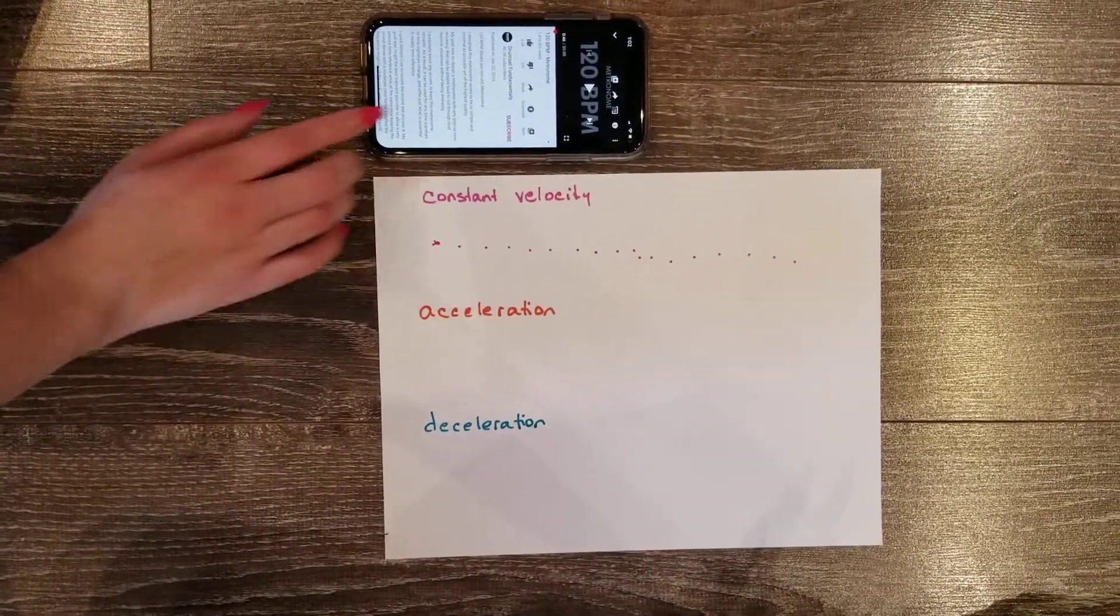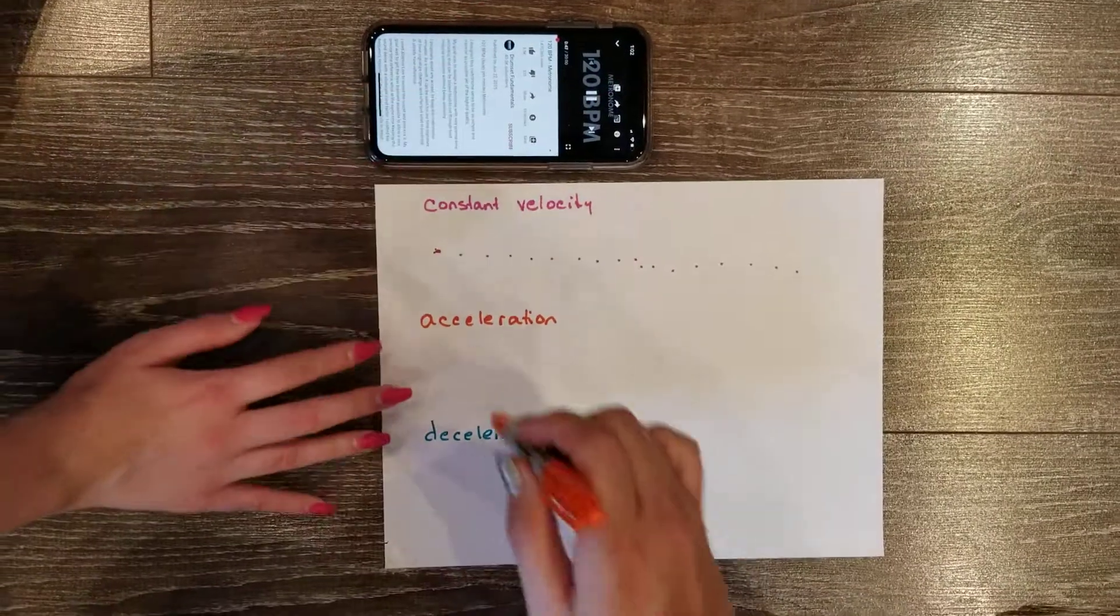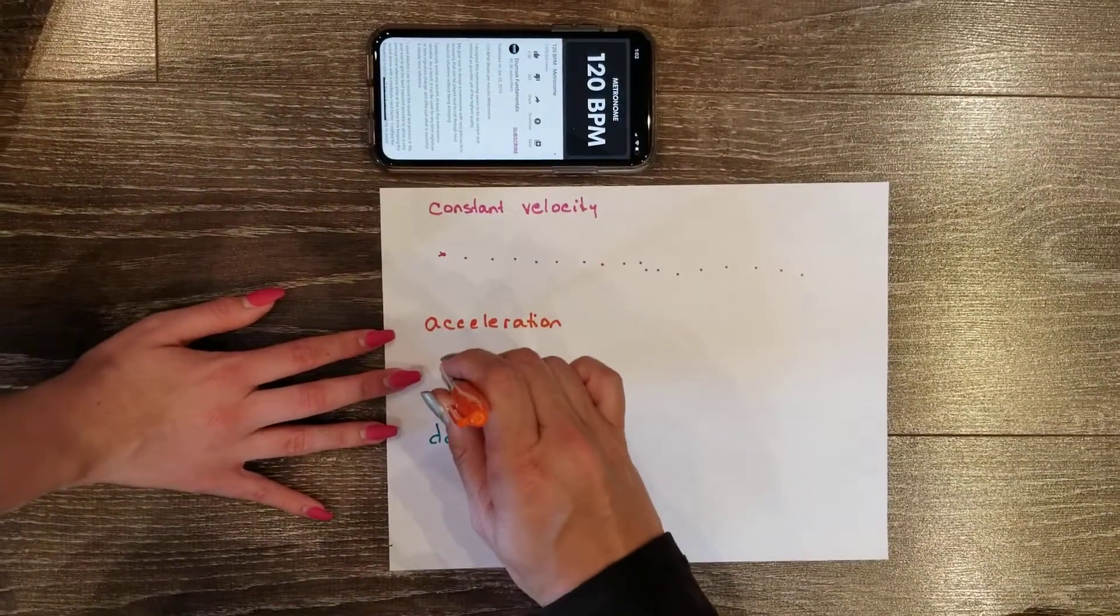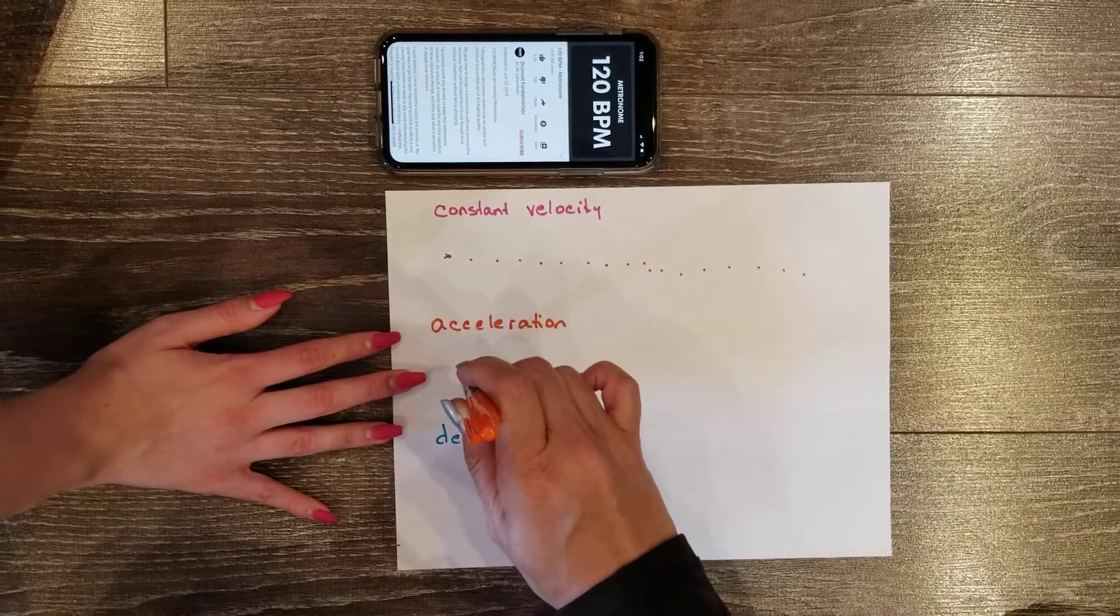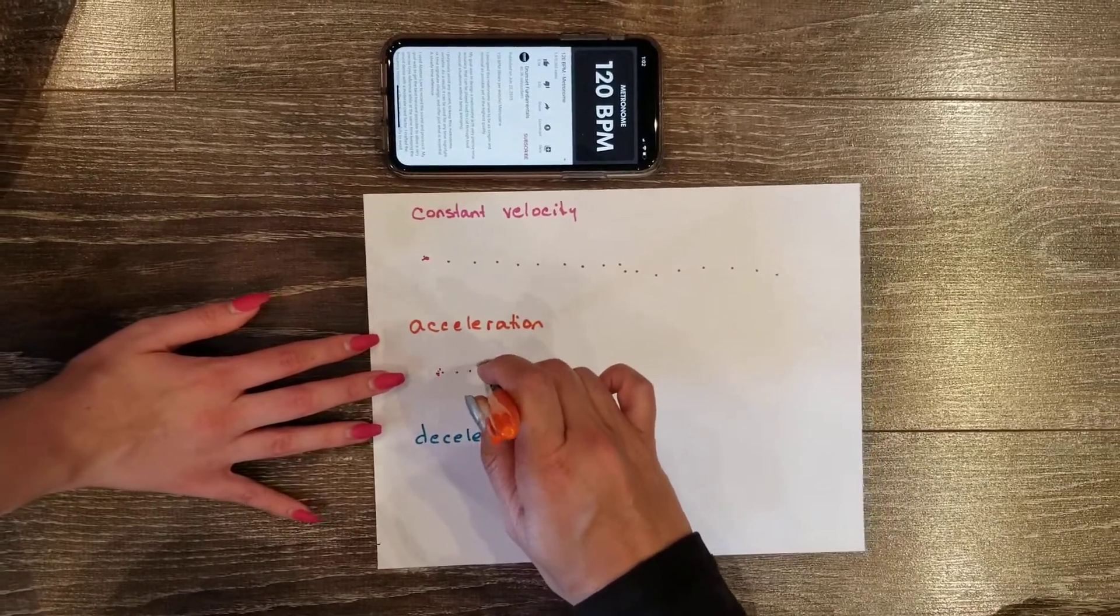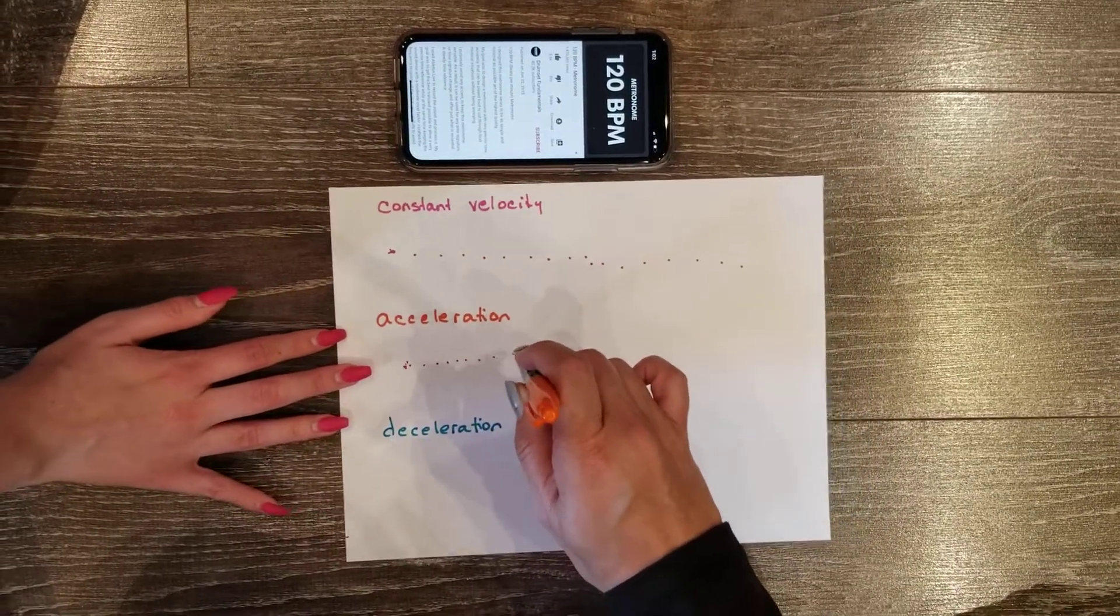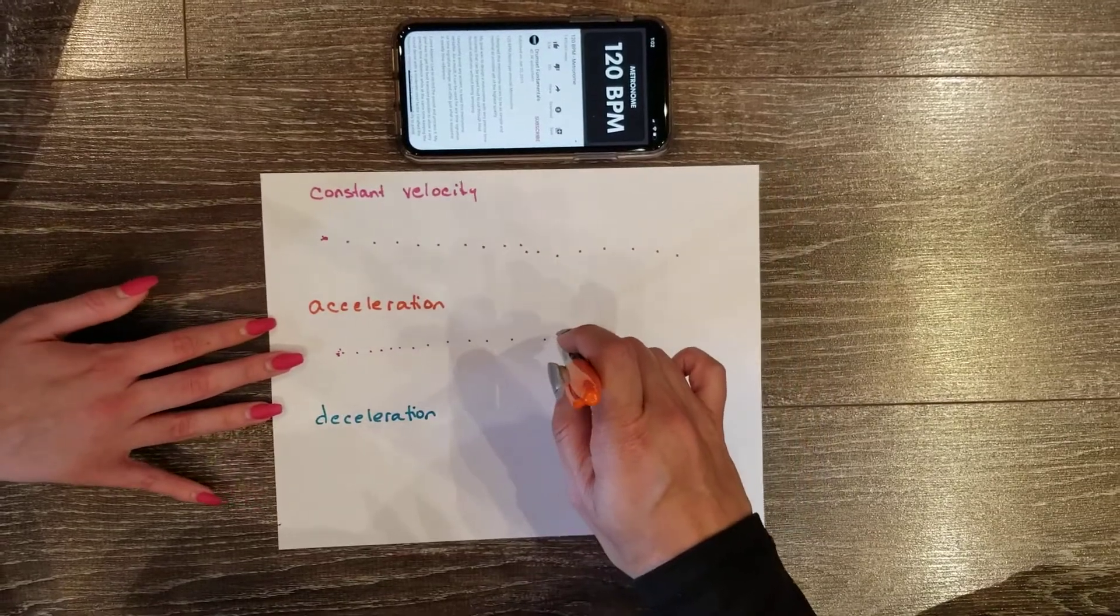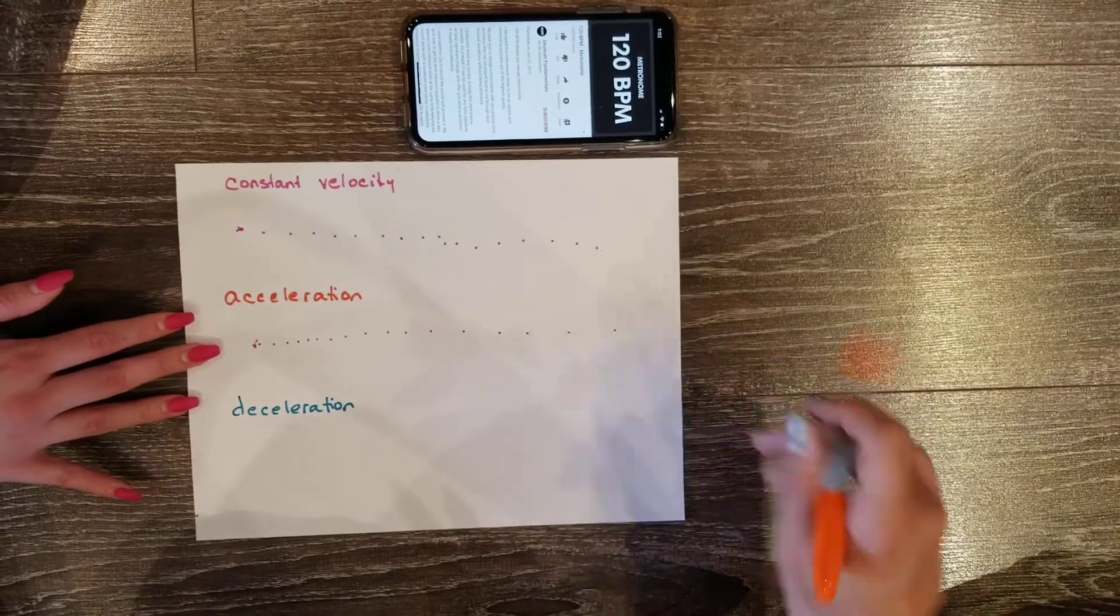Again, start your timer. This time before my helper pulls, they're going to start at a slow speed and then speed up. Again, I'm not moving my pen. I'm going straight up and down once every beat.